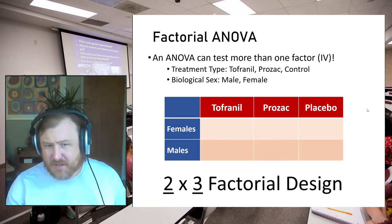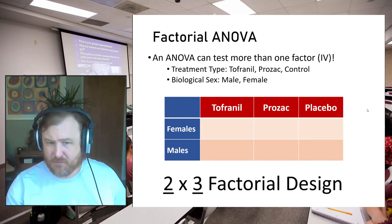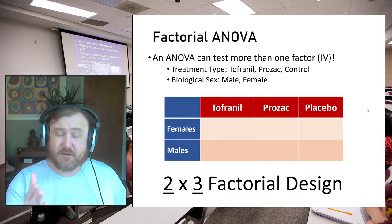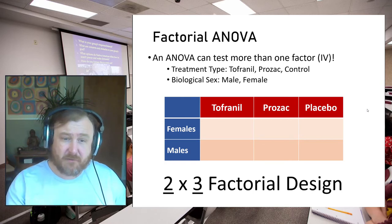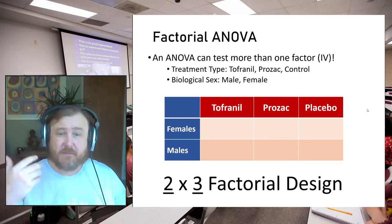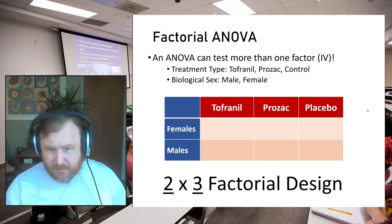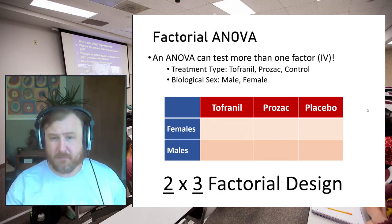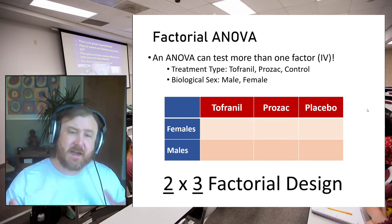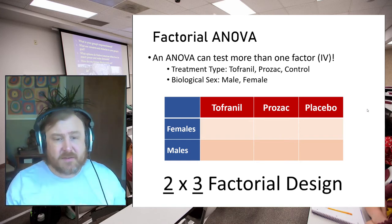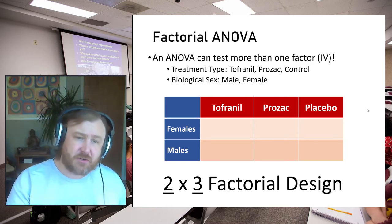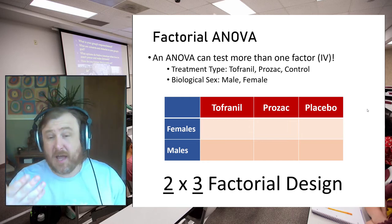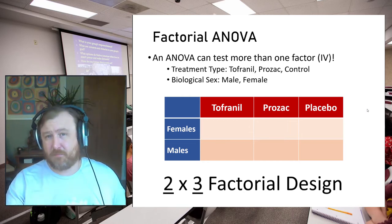We get the two because there are two levels of biological sex, and we get the three because there are three levels of the treatment type variable. If you multiply two by three, you get six, and you can see in this figure that there are six different cells: females who get tofranil and males who get tofranil, females and males who get Prozac, and females and males who get placebo. This factorial design allows us to look at the effect of treatment type, the effect of biological sex, and also how the type of treatment depends on a person's biological sex.